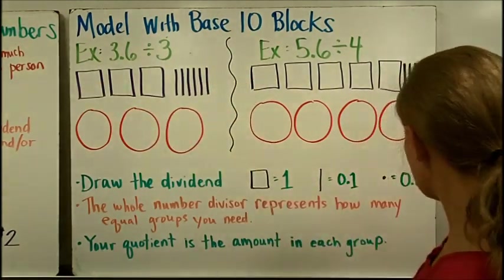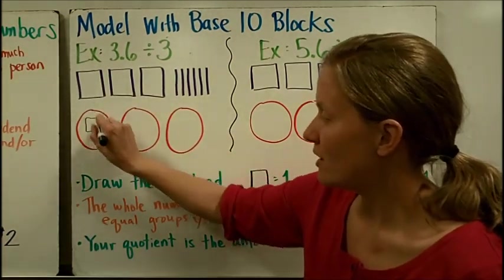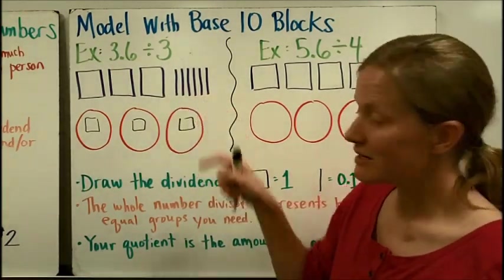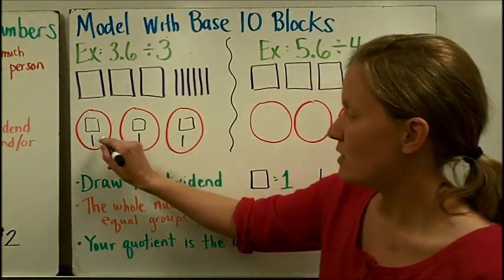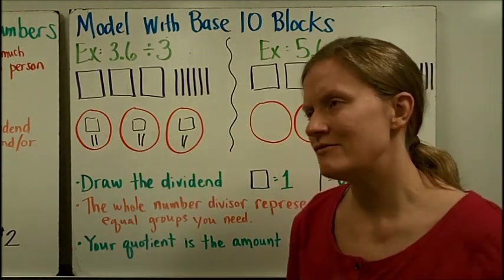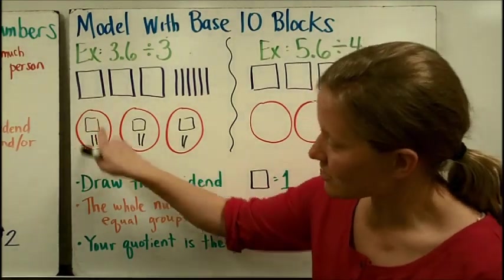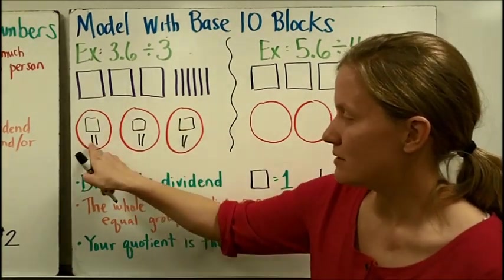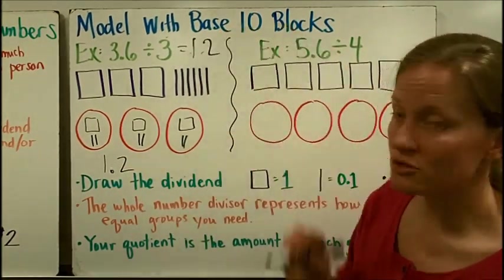Now my quotient is the amount in each group. So I'm going to go ahead and take what I started with and divide it evenly. So I see that I had 3 wholes, 3 wholes. I could put 1 in each of those boxes. And then I see that I had 1, 2, 3, 4, 5, 6 tenths. Well I could go ahead and go 1, 1, 2, 3, 4, 5, 6. Or I could have just thought 6 divided into 3 equal groups, each group would get 2. So then my answer is how much is in 1 or how much is in each group. So this is 1 whole and this represents 2 tenths. So 3.6 divided by 3 is 1.2.